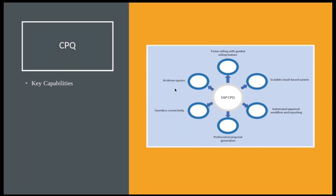The key capabilities of CPQ include: fast selling with guided selling features, scalable cloud-based applications, automated approval workflow and reporting, professional proposal generation, seamless connectivity, and AI-driven quotes. This AI-driven quotes capability is one of the important ones, and I will give you an overview of each capability.